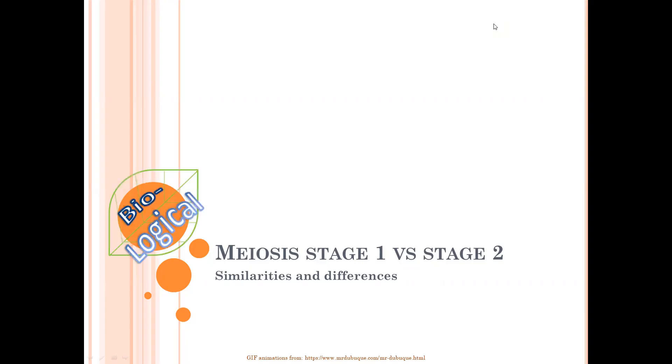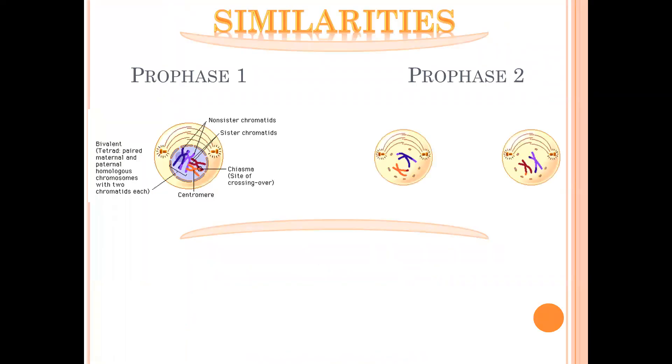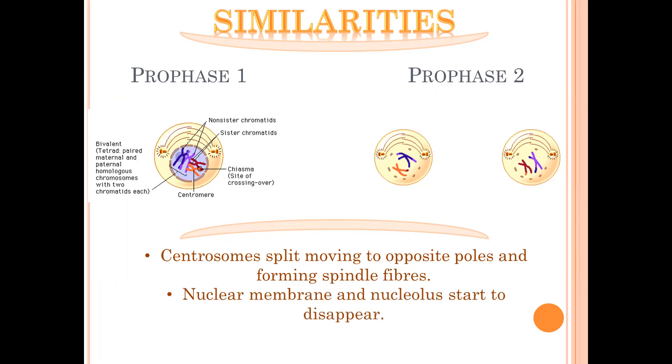We'll start off with prophase, comparing prophase I with prophase II. The similarities are that in both of them we have the centrosome splitting and moving to the opposite poles, and the spindle fibers are being formed. The nuclear membrane and the nucleolus start to disappear.